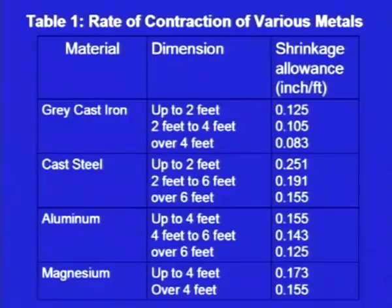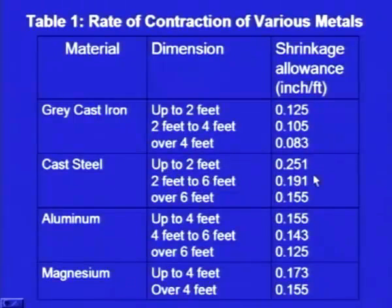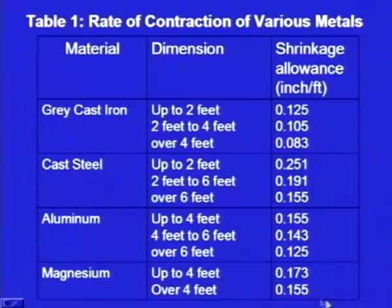This table gives us the contraction allowances or the shrinkage allowances of various metals. For grey cast iron, for the listed dimensions, these are the shrinkage allowances. For cast steel, for the listed dimensions, these are the shrinkage allowances. For aluminium, for the listed dimensions, these are the shrinkage allowances. For magnesium, for the listed dimensions, these are the shrinkage allowances.